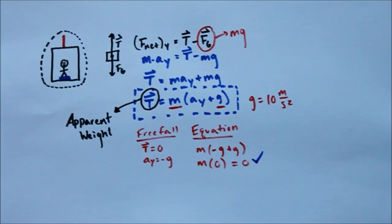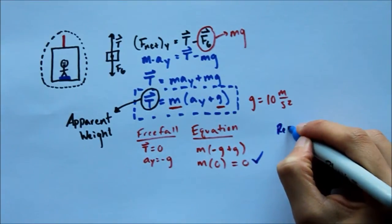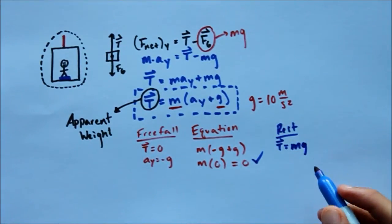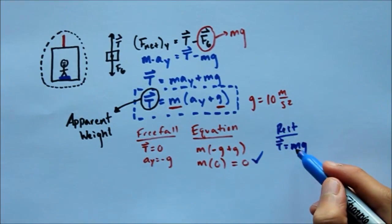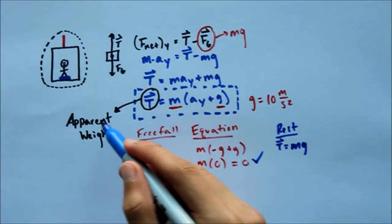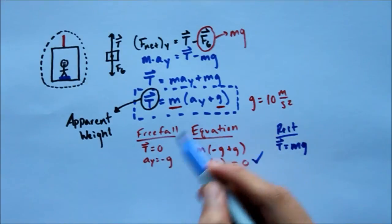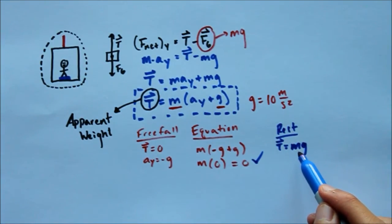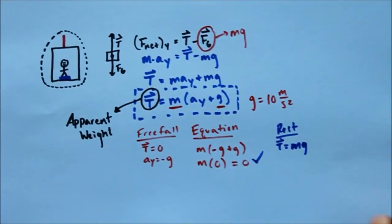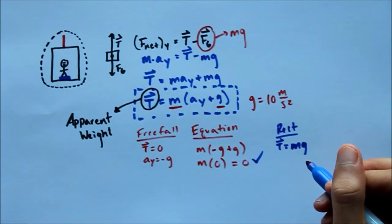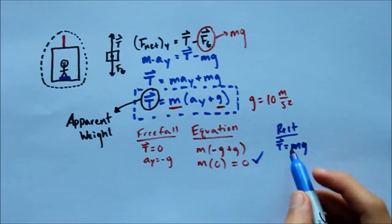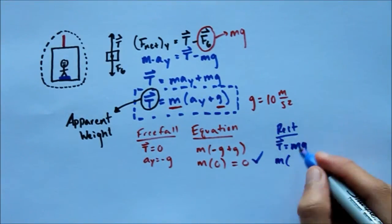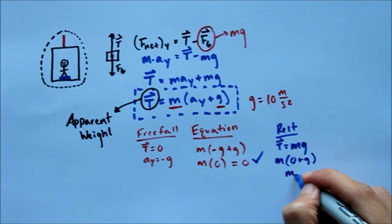The second test: what if I'm just standing still — the elevator is at rest? When at rest, I would expect my tension or apparent weight to equal my actual weight due to gravity. Weight is mass times acceleration due to gravity, so tension should equal mg. Testing it: m times (ay + g), where ay = 0 at rest, gives m times (0 + g) = mg. This checks out.